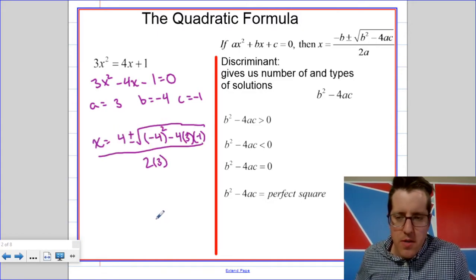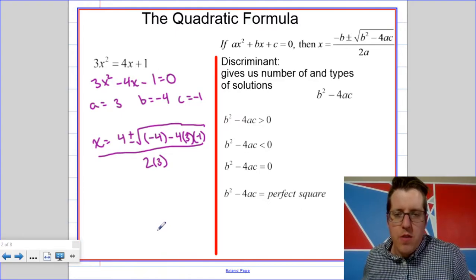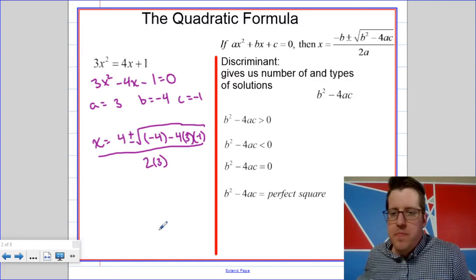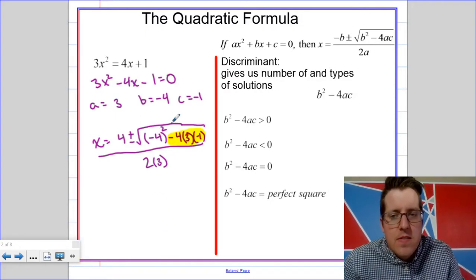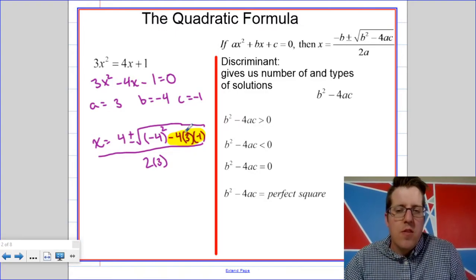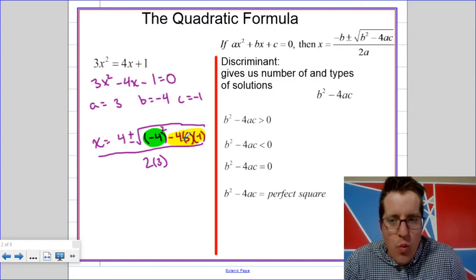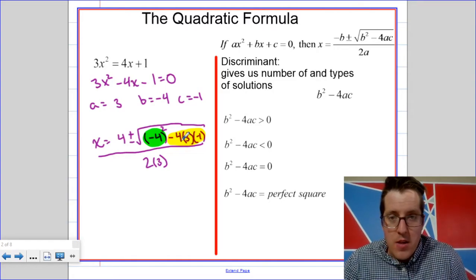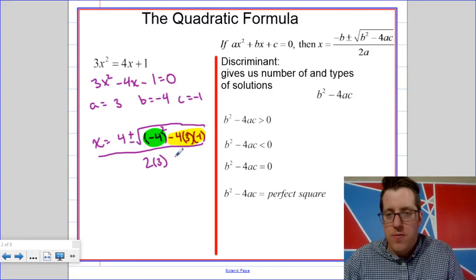and then we're going to plug into the formula. There are two things that I want you to think about when you plug into the formula. One of them is count the negative signs. You should think of this as negative 4 times 3 times negative 2. Since there are two negative signs there, you're going to end up adding. The other thing is that whatever you're squaring is going to end up positive. So, if you square negative 4, it's going to end up being positive 16.